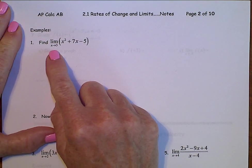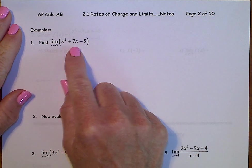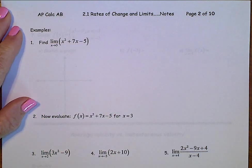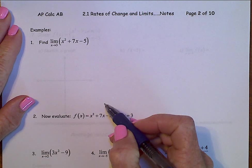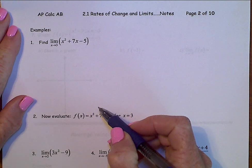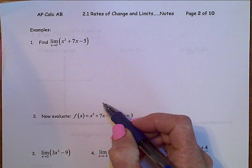The limit as x approaches 3 of x squared plus 7x minus 5. And from the previous page, we talked briefly that limits can be separated over addition, subtraction, multiplication, and division.